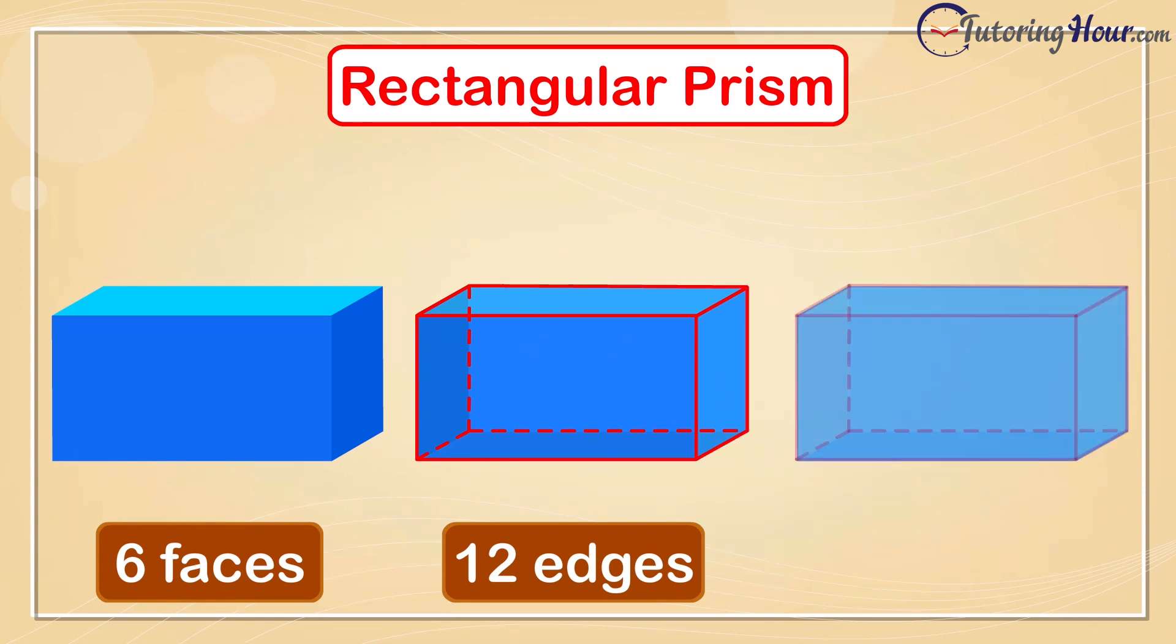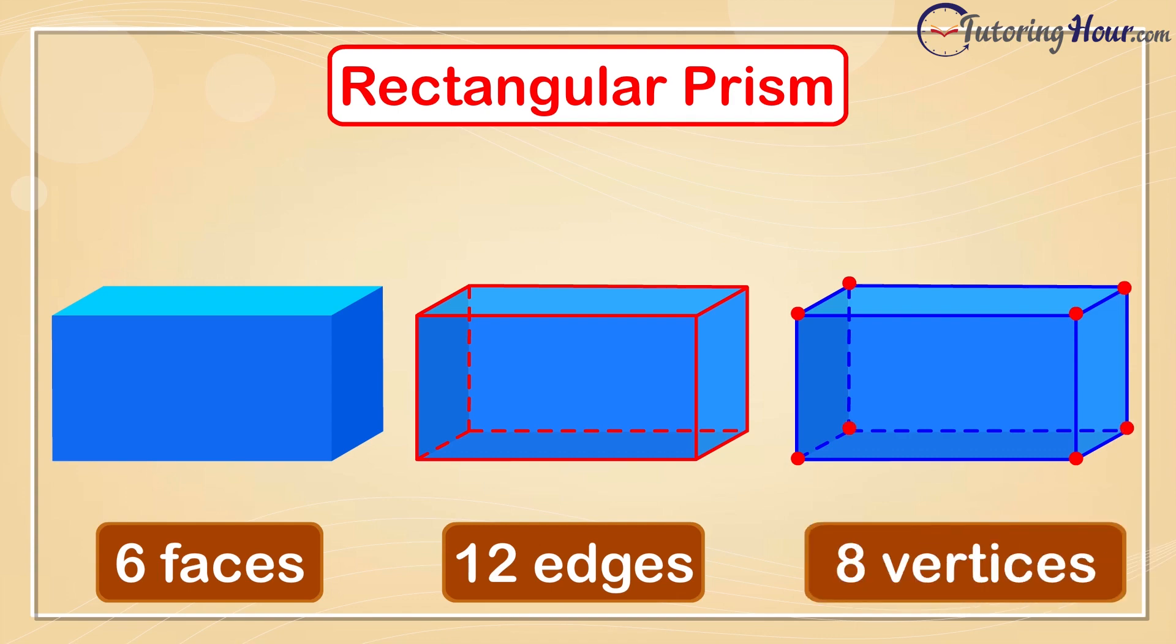Let's find out how many vertices there are in a rectangular prism. There are 1, 2, 3, 4, 5, 6, 7, and 8 corners, or vertices.